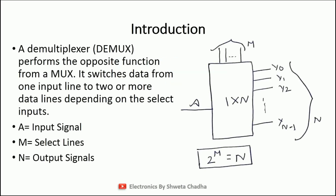A demultiplexer, commonly known as demux, performs the opposite function from a multiplexer. In the last video I discussed everything related to the multiplexer. A demultiplexer switches data from one input line to two or more data lines, depending on how many select lines we have.